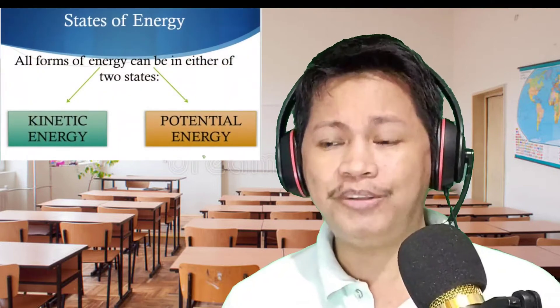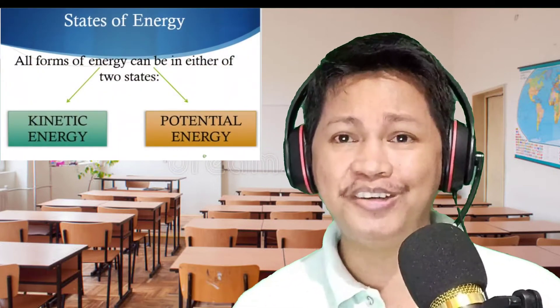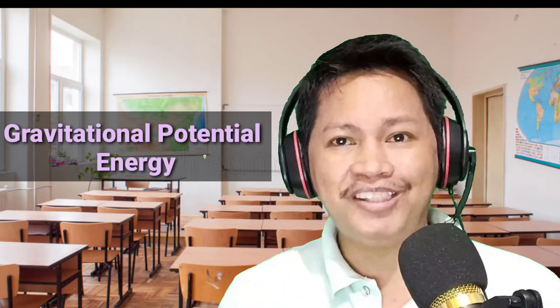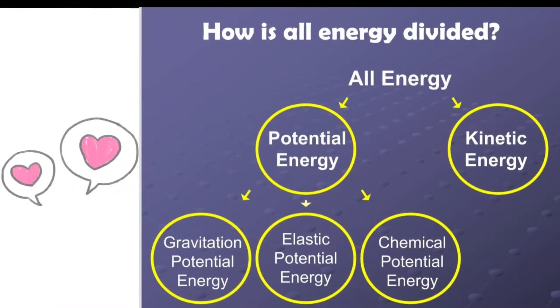All forms of energy can be in either of two states: kinetic energy or potential energy. Our lesson today focuses on gravitational potential energy, so we need to find out what gravitational potential energy is and how it differs from potential energy. Energy is divided into two major classifications: potential energy and kinetic energy. Under potential energy, there are three forms: gravitational potential energy, elastic potential energy, and chemical potential energy.